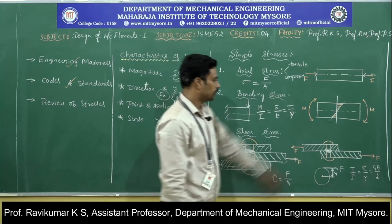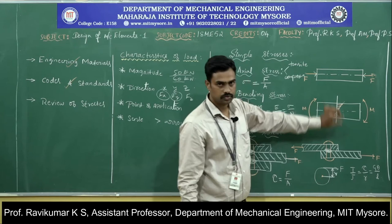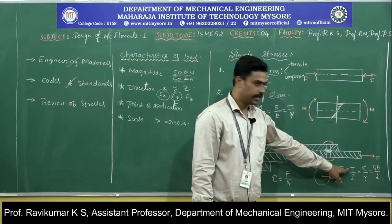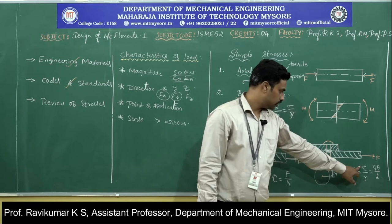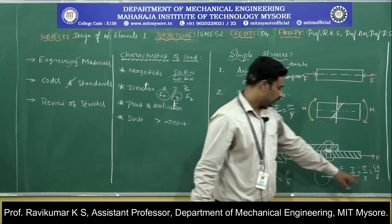The neutral axis is the point where stress is zero. Y is the distance from the neutral axis to the outermost fiber. In the general torsion equation, T is torque or torsional moment (N·mm), J is the polar moment of inertia (mm⁴), τ is shear stress (N/mm²), R is the radius of the shaft (mm), G is the rigidity modulus (N/mm²), and θ is the angle of twist, usually in degrees but converted to radians.